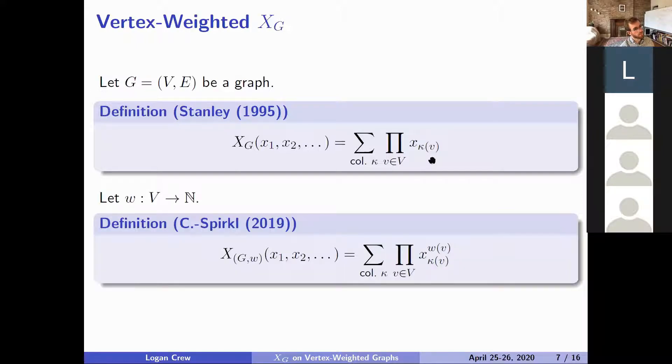Sophie and I are going to fix this by introducing a vertex weight. We're assigning each vertex a positive integer weight. The definition now changes by simply taking each vertex and its corresponding coloring, but we input the X variable equal to the weight of the vertex. So if we color our vertex one and it has weight three, that vertex contributes X one cubed to the overall monomial.